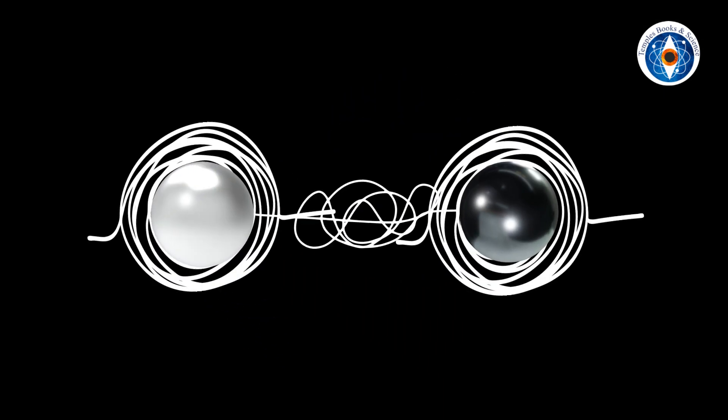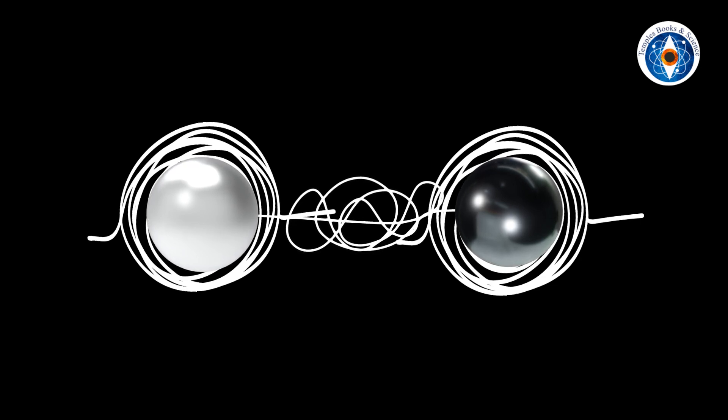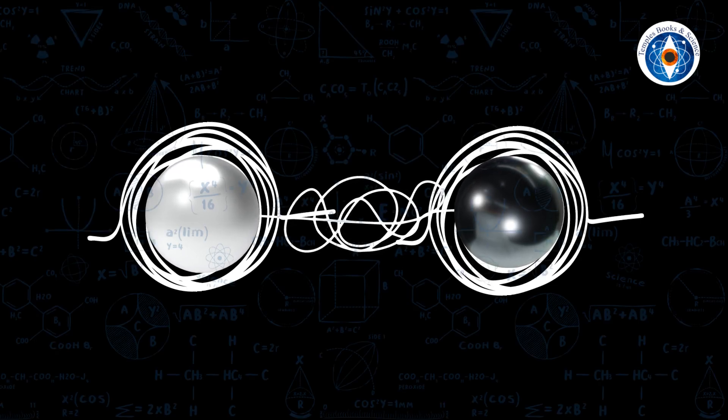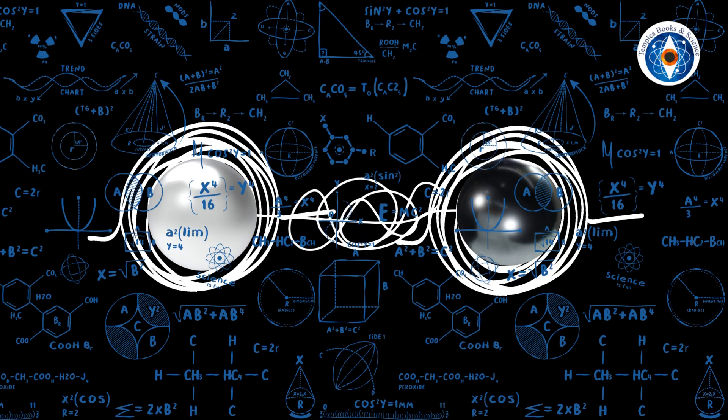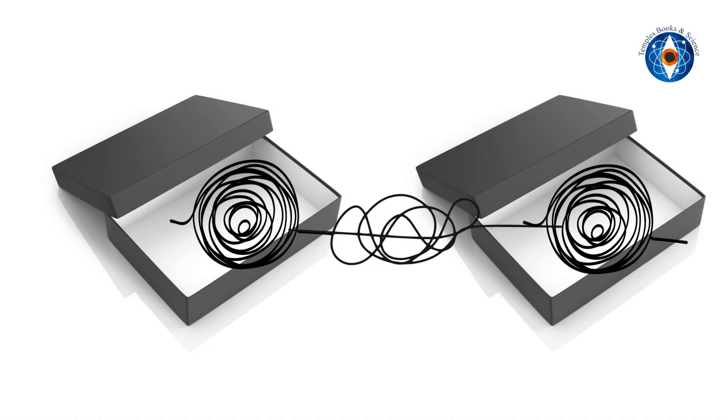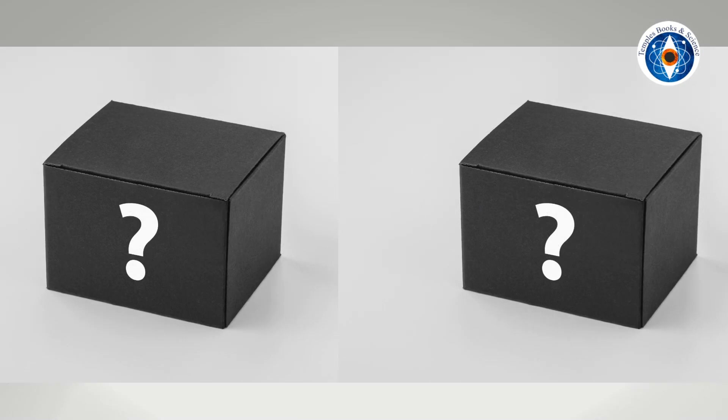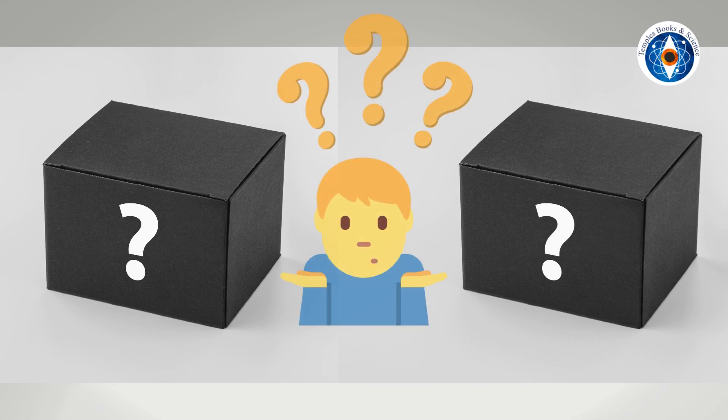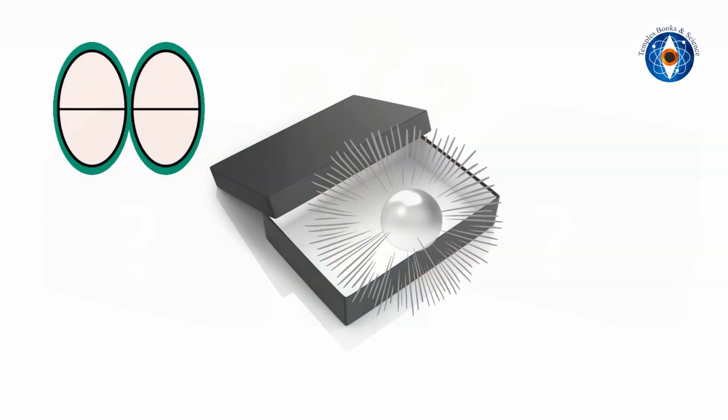In the case of entangled particles, if one ball is white, the other ball has to be black. Let us look at how quantum physics explains this phenomenon. Let us assume you have created the entangled particles and placed them in two separate boxes. Before you have made an observation, neither particle exists. So what is inside those boxes? It is impossible to see. You can only say that the two boxes do not contain any real particles.